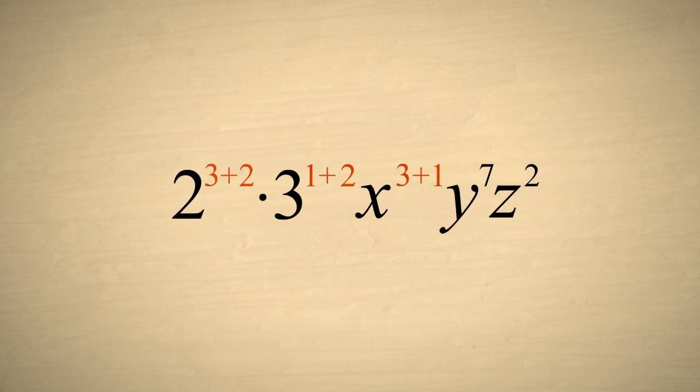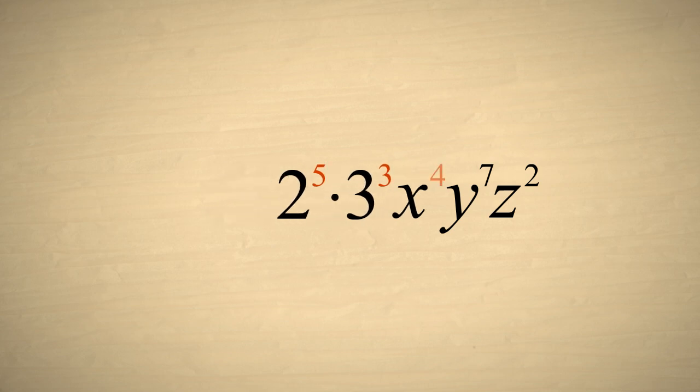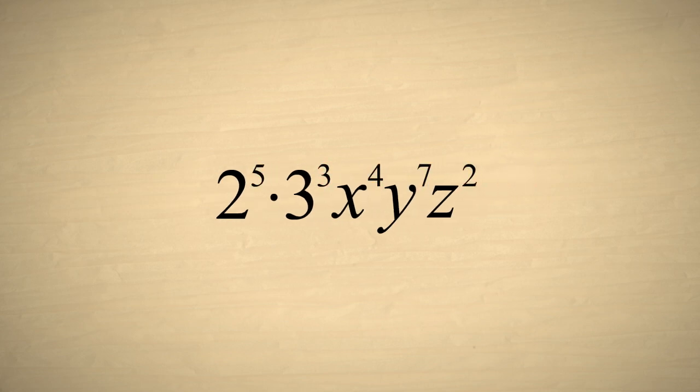This gives us two to the fifth times three cubed times x to the fourth times y to the seventh times z squared. If we like, the numeric terms may be kept separate or we can simplify this a bit further by combining them into a single number.